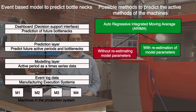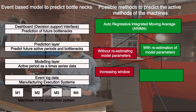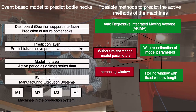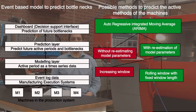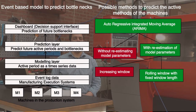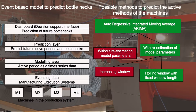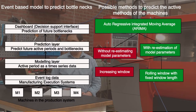With re-estimating the model parameters, there are two options: an increasing window and a rolling window. We chose the rolling window because the manufacturing execution system at the given case company stores no more than 315 production runs of data. Therefore, in this type of environment, a rolling window with re-estimation of model parameters is a suitable model.